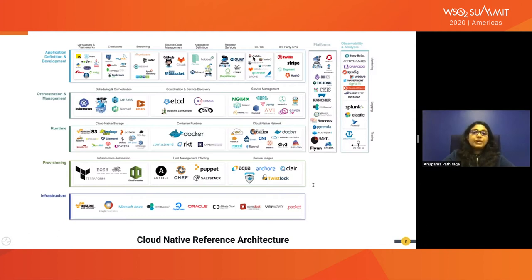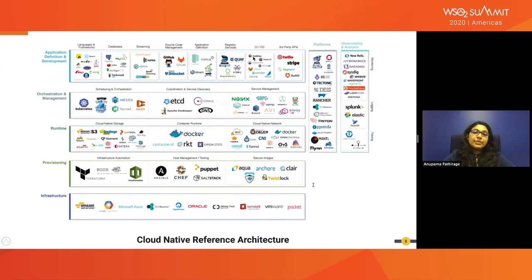The next layer is the orchestration and management layer. This layer deals with how all containerized services are managed as a group. They need to identify other services, communicate with them, and coordinate with them. Common features managed by these orchestrators include container scheduling, provisioning, discovery, system monitoring, crash recovery, configuration, and load balancing.